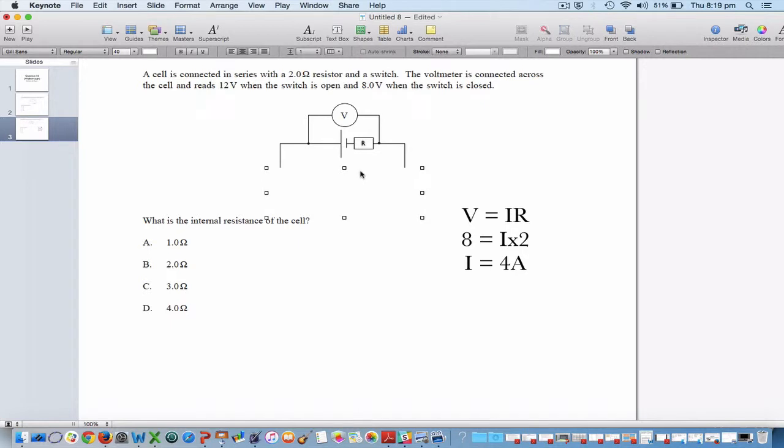Now how do we know that? Well because if there's nothing else in the circuit, apart from a resistor, so in other words if the circuit just looks like that, then the total voltage in the entire circuit is 12 volts. If the total voltage in the entire circuit is 12 volts, and the only place that the voltage is coming from is that cell there, then the cell itself must have an EMF of 12 volts. And that entire 12 volts is going through this resistor. So there's 12 volts in this scenario, when the switch is open.